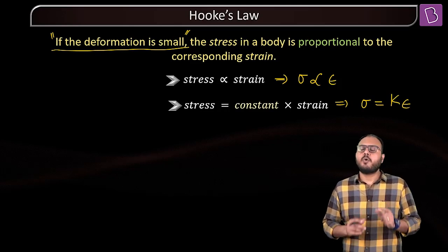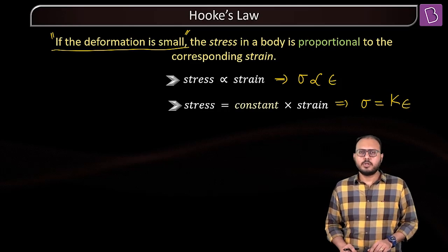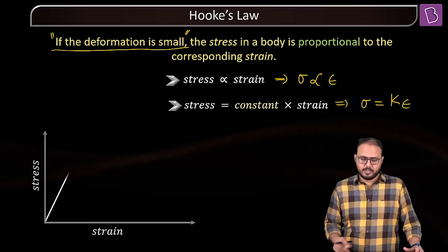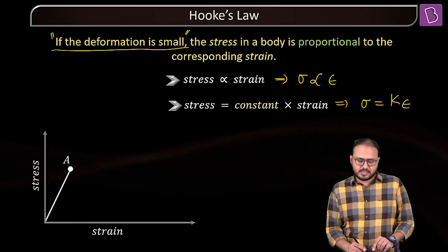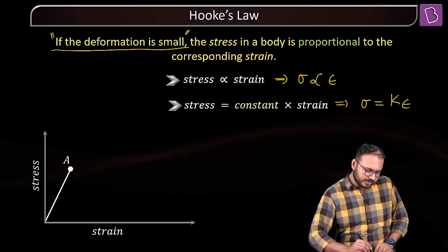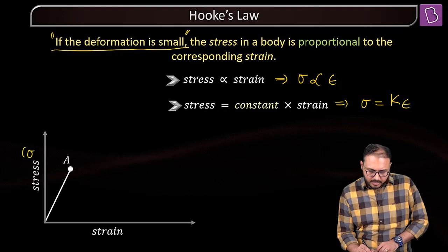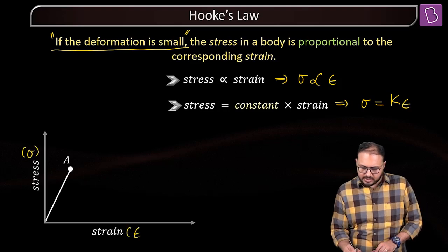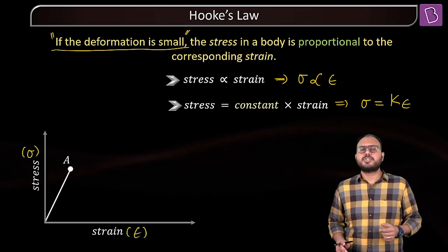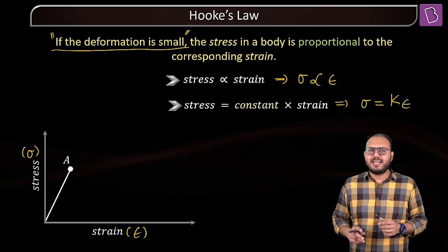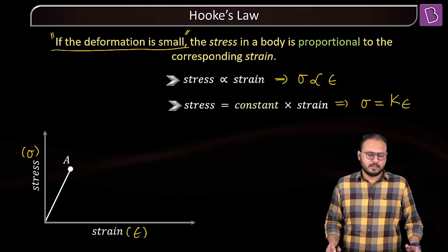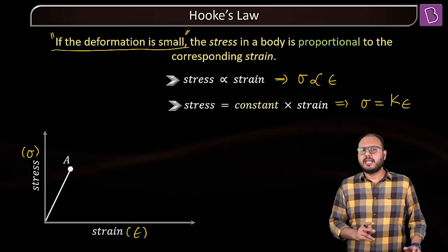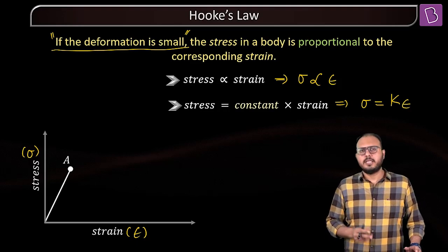What is this small deformation? Hooke's Law says small deformation. Small deformation means stress — if I plot my stress versus strain graph, proportionality means a linear graph passing through the origin. So you are saying till point A, they are proportional. Till point A.